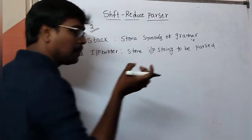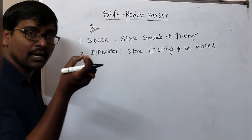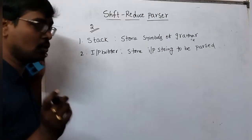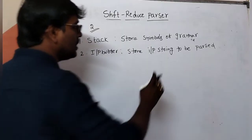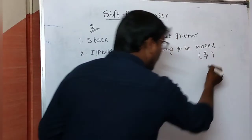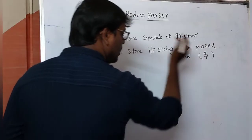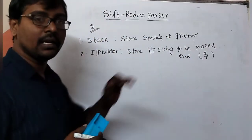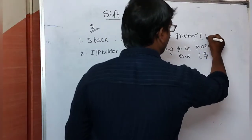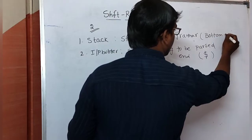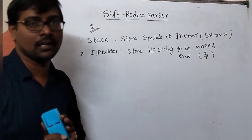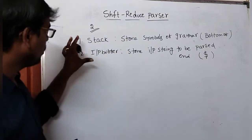The input buffer simply stores the input string — the string to be parsed. These are the two data structures. The end of the input string is always marked with dollar, and the bottom of the stack is also marked with dollar, indicating the end of the string.